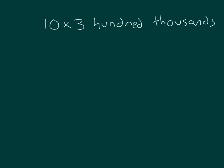Let's look at another problem. Here we have ten times three hundred thousands. What does this equal? Well, let's see. Ten times three — instead of just three hundred thousands, I'm going to have ten times three, or thirty of those. Thirty what? It would still be hundred thousands.